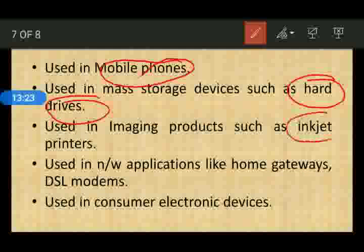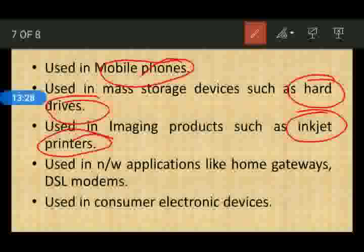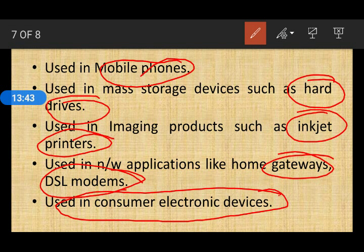Applications of the ARM7 processor include network applications such as gateways and DSL modems, as well as consumer electronic devices such as washing machines, TVs, and other appliances. There are various types of applications, and only selected applications are listed here.